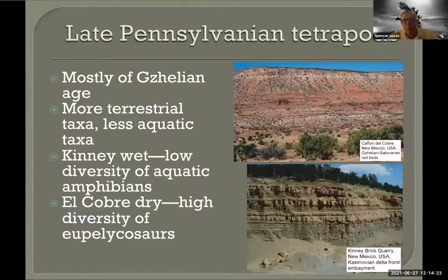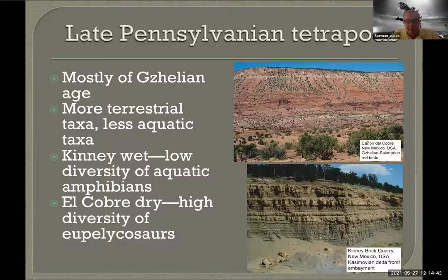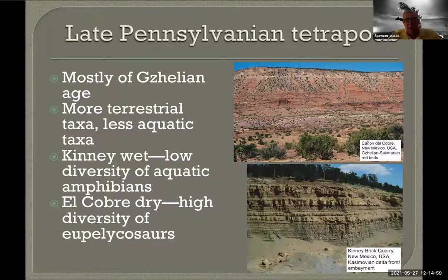Once we get into the late Pennsylvanian, we still have aquatic tetrapod assemblages like the Kinney Brick Quarry — about 20 kilometers from where I'm sitting — where we have a marine embayment and tetrapods consisting of very aquatic-looking amphibians. But then we have something we never really had before: fluvial red beds in the later Pennsylvanian. We have them here in New Mexico at Canyon del Cobre, and Ron showed us rocks in the Appalachian Basin with calcareous paleosols and well-drained floodplain deposits — and we get all these terrestrial animals that we never saw before.